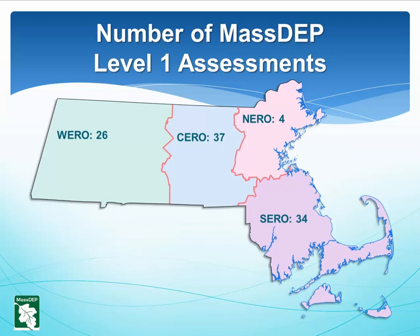Number of MassDEP Level 1 Assessments: MassDEP's Northeast Region has only 4 Level 1 Assessments, compared to the Western Region's 26, the Central Region's 37, and the Southeast Region's 34. The Northeast Regional Office municipal systems are predominantly served by the Massachusetts Water Resources Authority, and they have almost no Transient Non-Community (TNC) and Non-Transient Non-Community (NTNC) systems, which are disproportionately likely to have bacteria problems and trigger assessments.